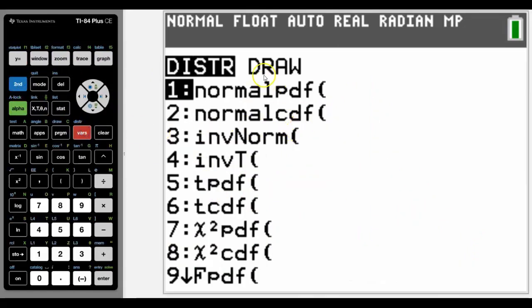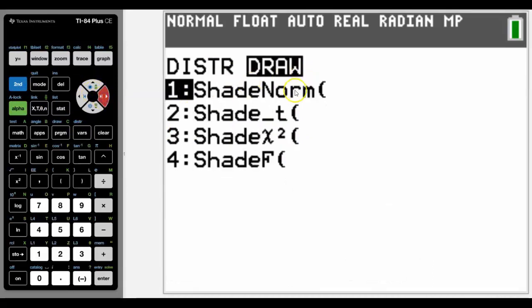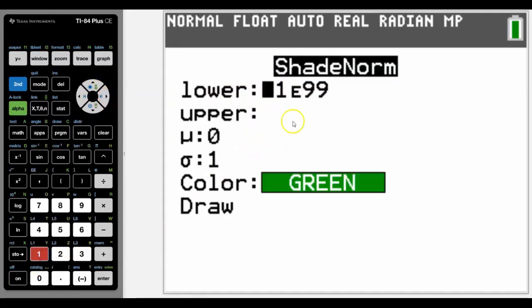So if you did want to do a draw, then we come across the draw this time. We then do shade norm. And it's all set up as before.